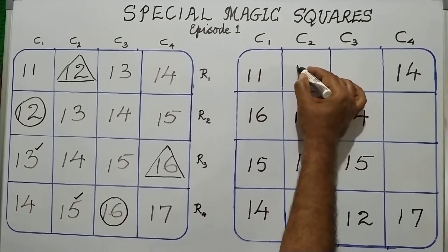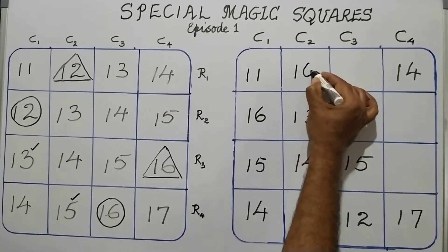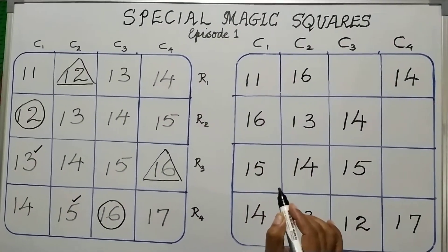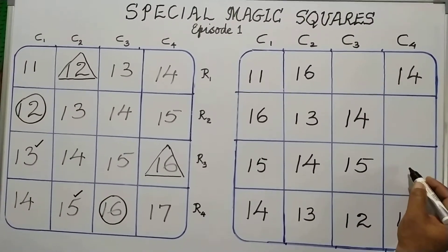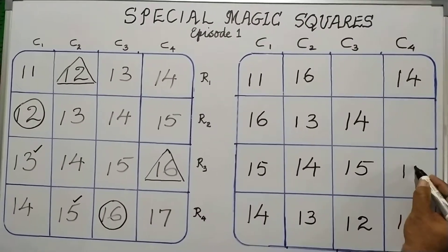These two elements, we are going to interchange. So, instead of 12, I will write 16 in column 2, top slot. And in column 4, the third slot, which was 16, I will write it as 12.